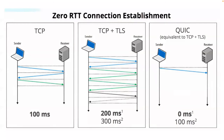One of the highlights of QUIC is the idea of zero RTT connection establishment. In the very extreme left we see traditional TCP with a three-way handshake, and then with TCP and TLS there's a lot more that has to happen before we can actually start transmitting data, due to the added security of TLS. But with QUIC, we can literally transmit data after just one interaction with the server, which really reduces the latency associated.